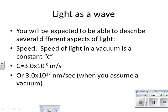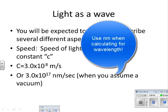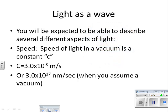But the other one, 3.0 times 10 to the seventeenth nanometers per second. You're going to use this when you're assuming a vacuum. And when we start talking about different wavelengths of light, they're going to be in nanometers. So that's going to be the one that you're going to need.